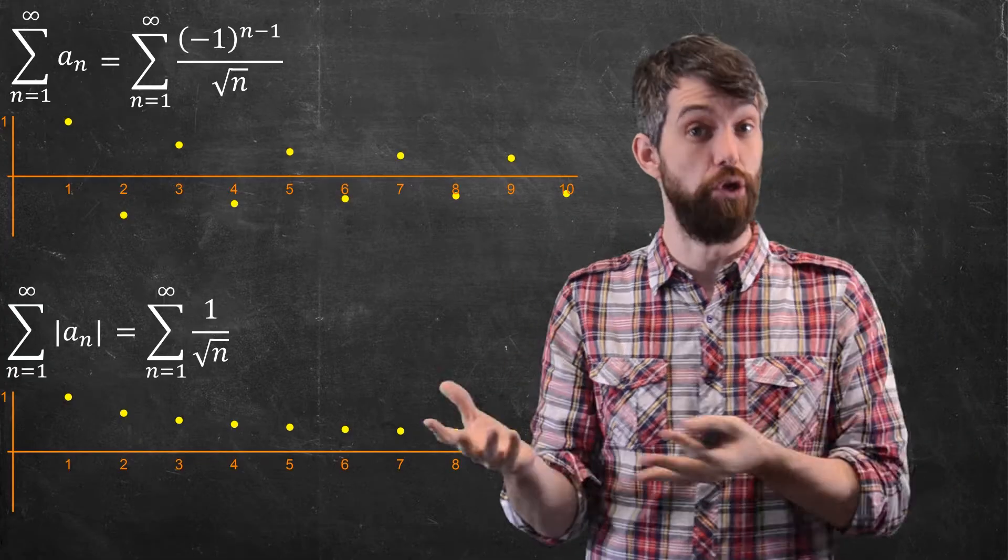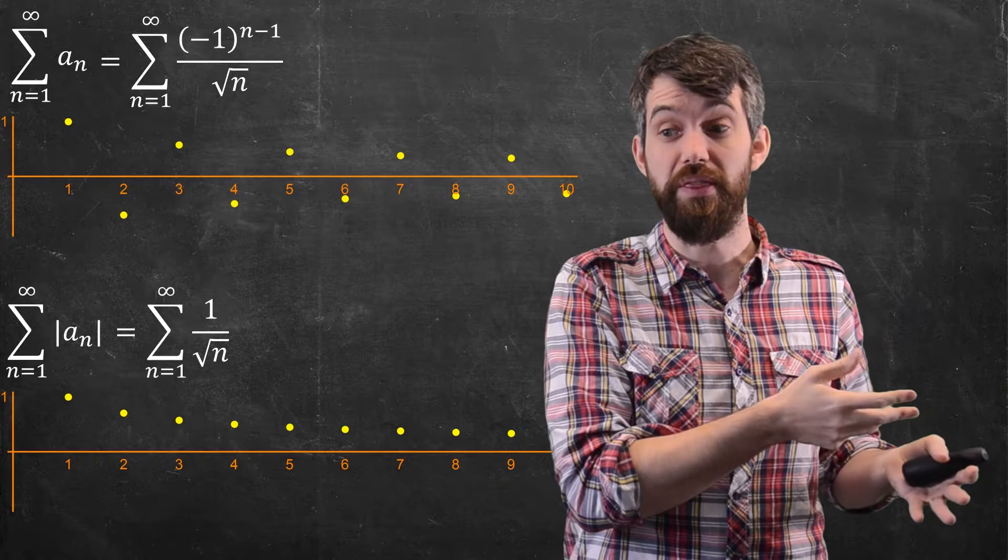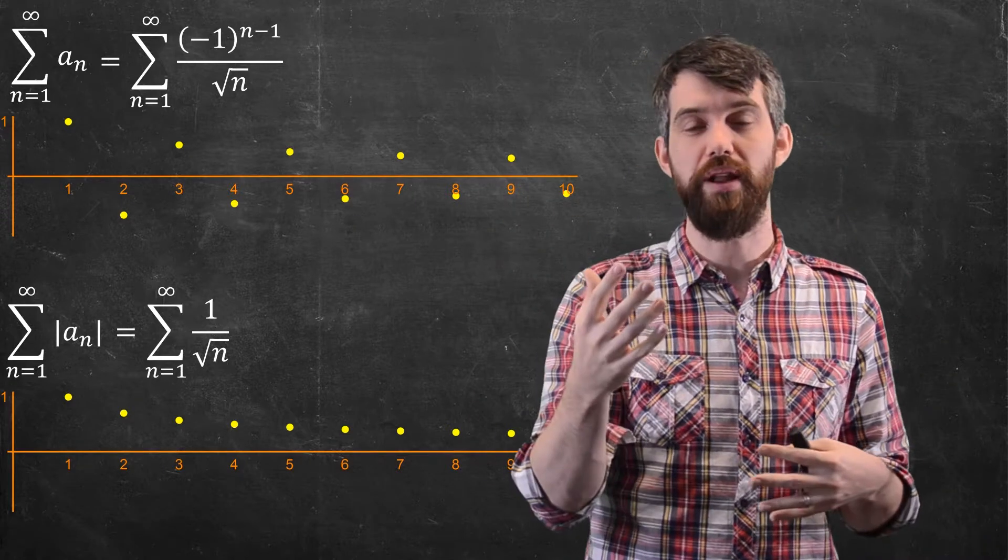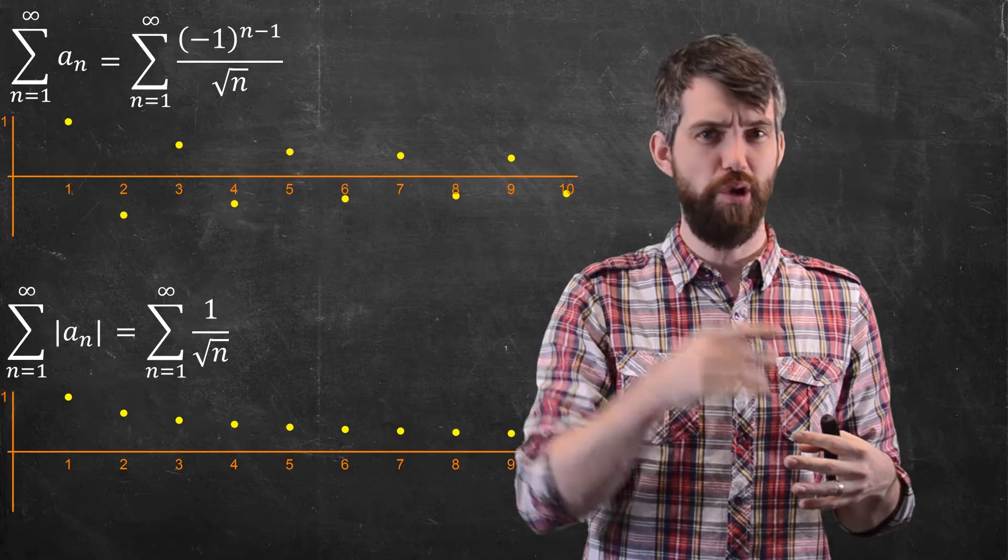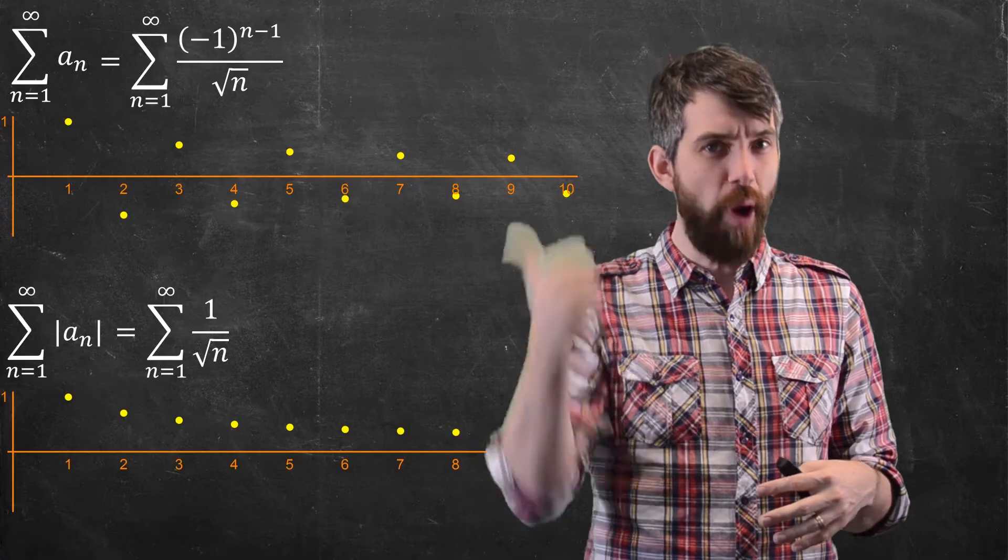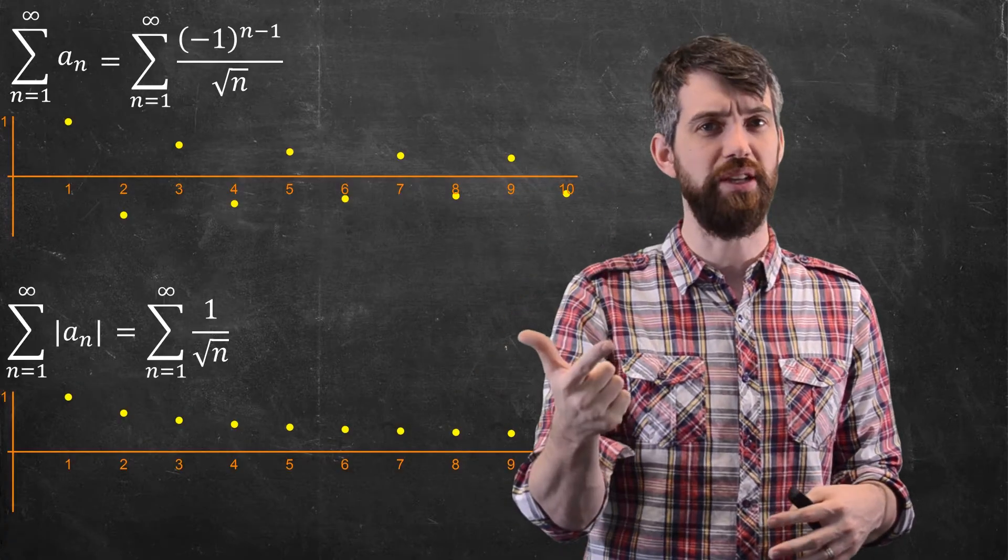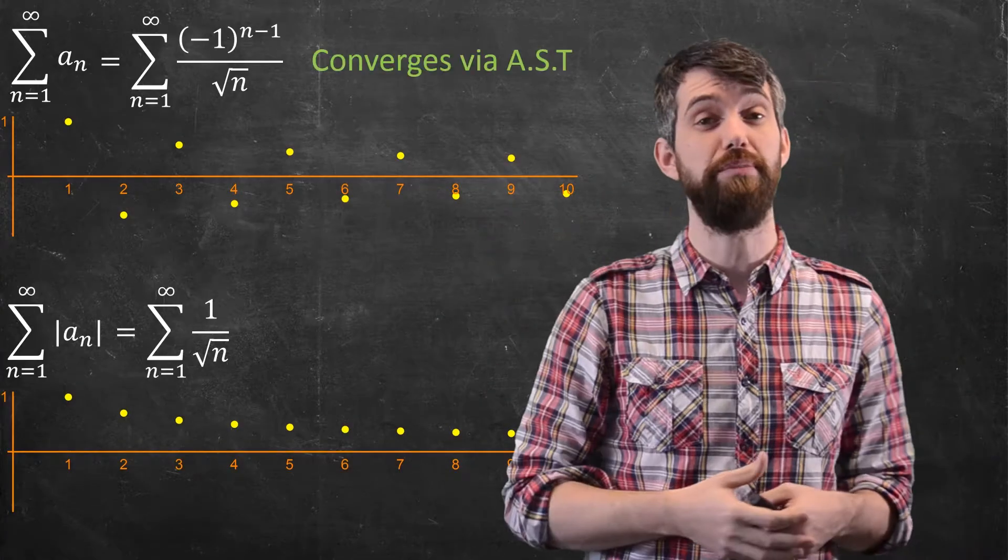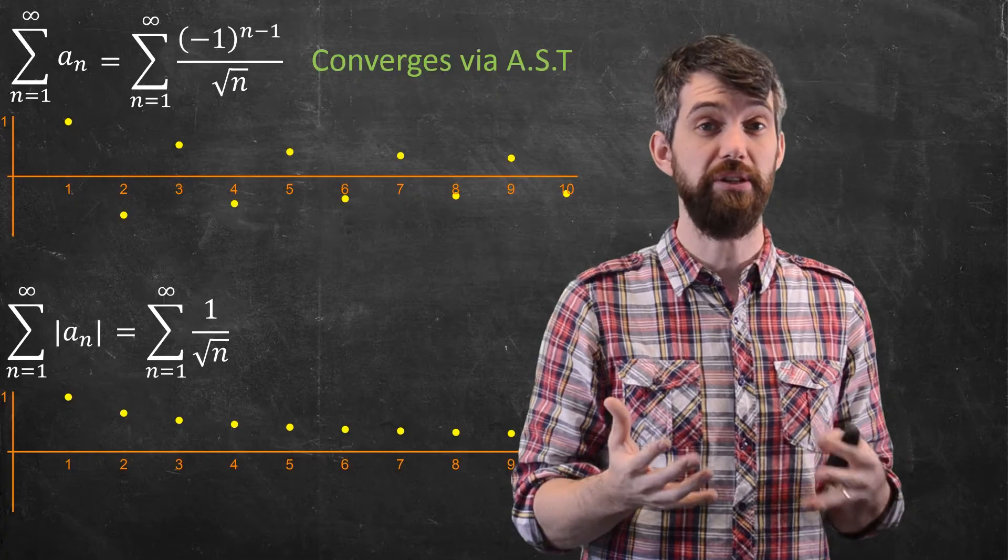Now, these two sequences are ones that we can do by previous methods we've seen. The top one, it's an alternating thing with the minus 1 to the n minus 1. And then it multiplies it by 1 over square root n, which is a positive, decreasing sequence with limit zero. It satisfies all conditions of the alternating series test. So the top one indeed converges by the alternating series test.